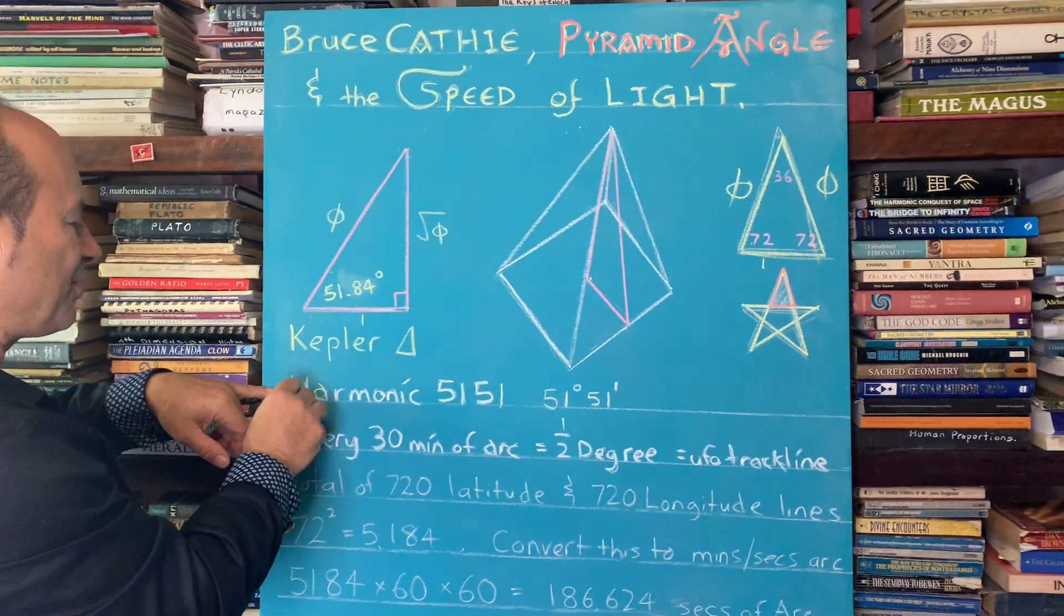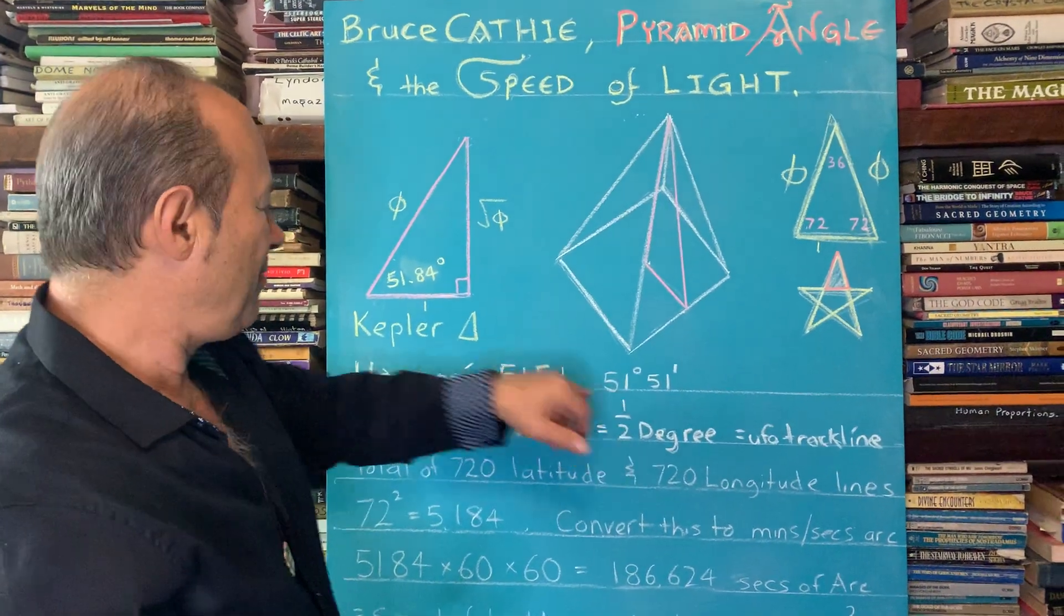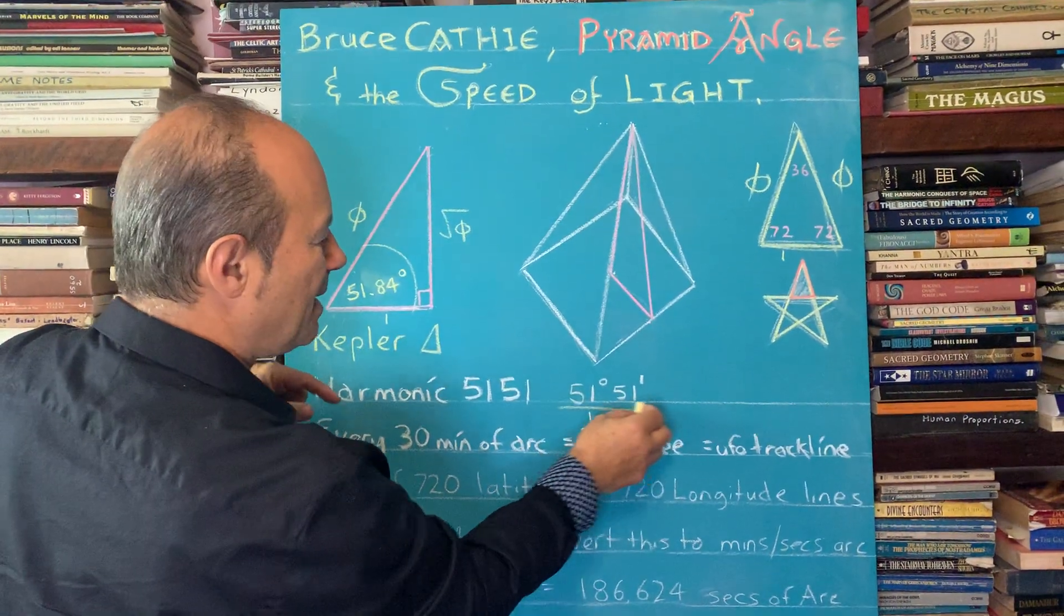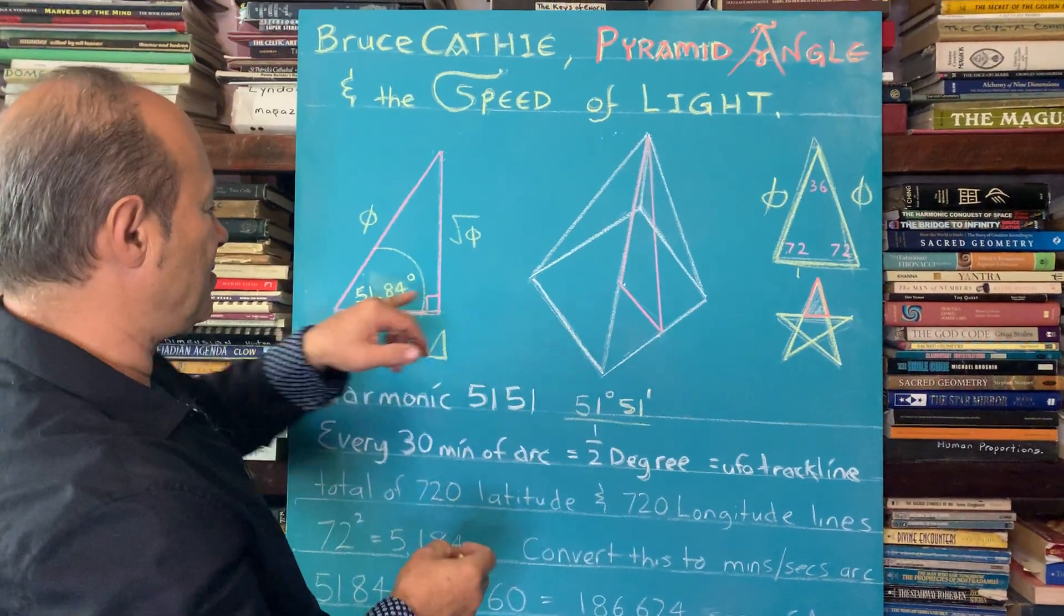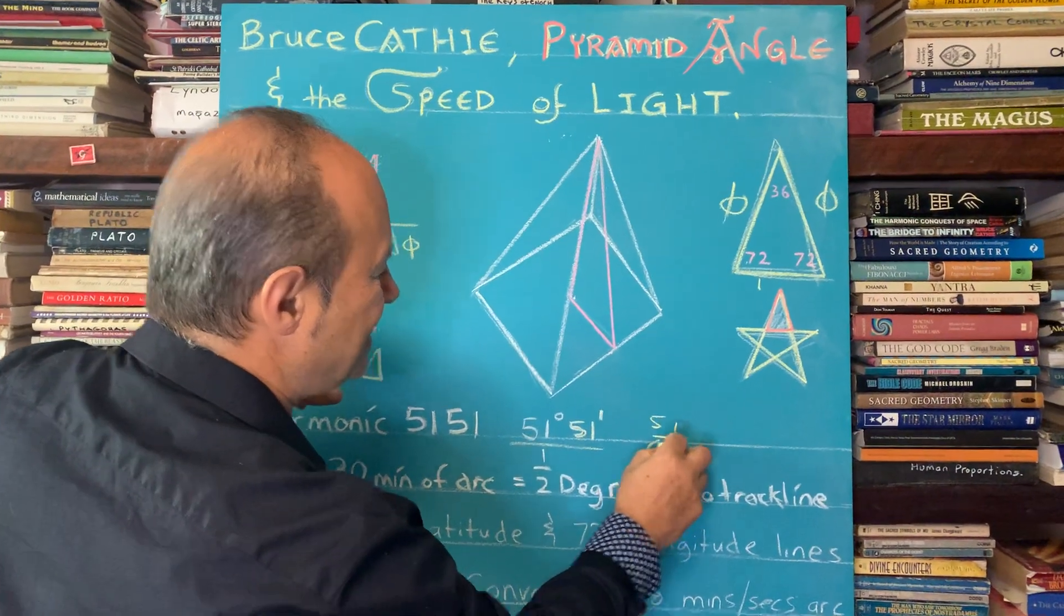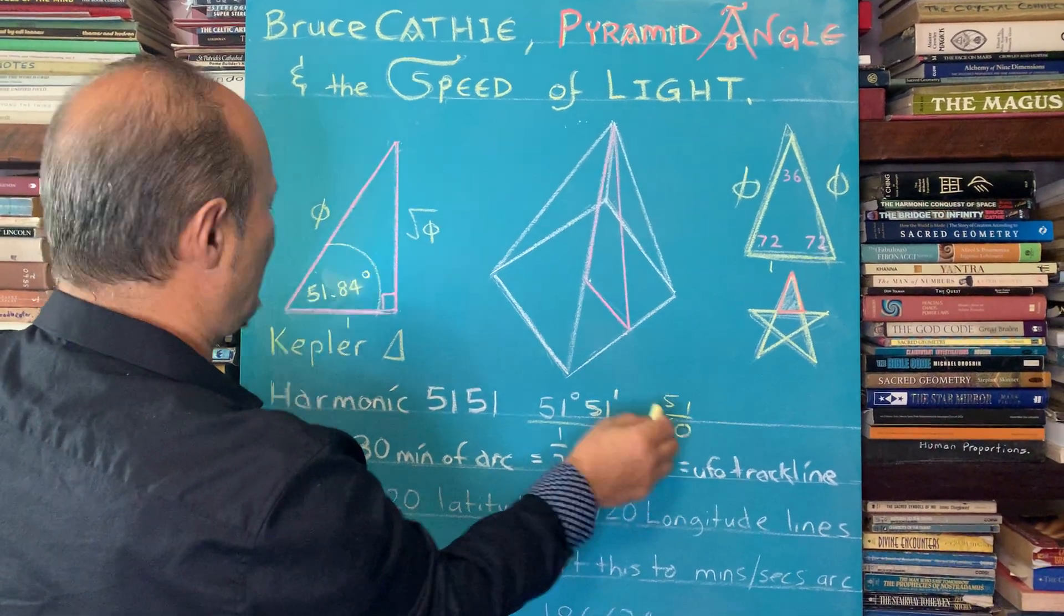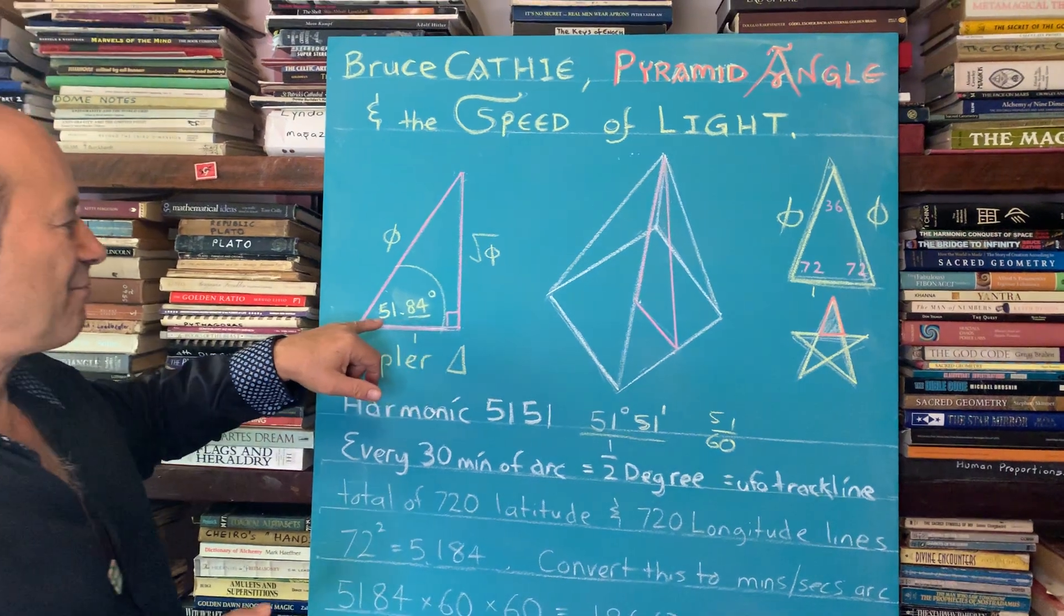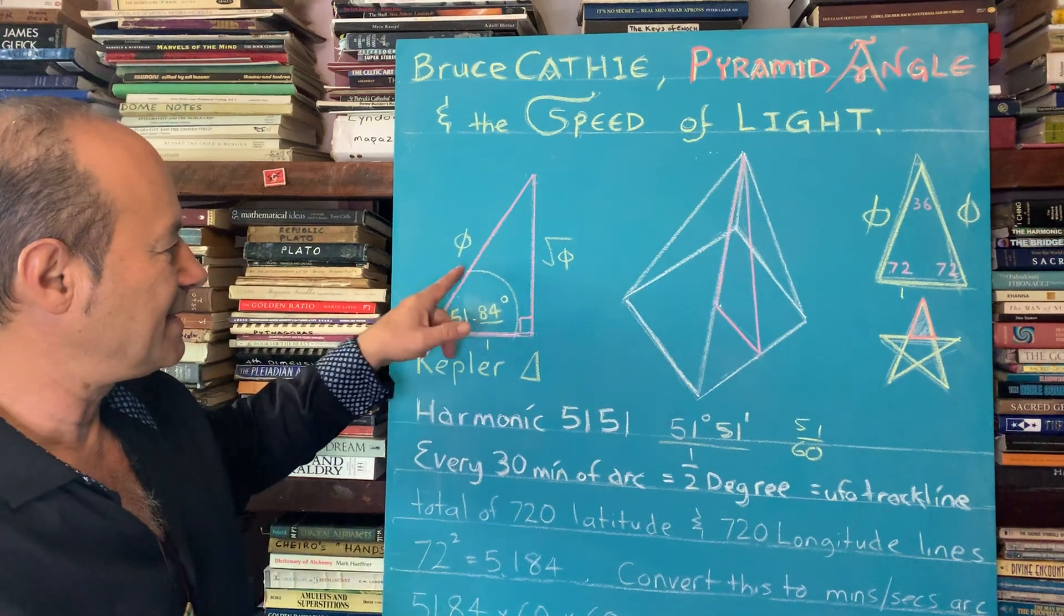Some authors have called this harmonic 51-51, but that's referring to the pyramid angle here is 51 degrees, 51 minutes. But we have to convert 51 minutes into a decimal. To do that, you have to look at 51 over 60, because there's 60 minutes in a degree. So 51 over 60 is roughly 0.84. So 51.84 is the critical degree as a decimal, the base angle.